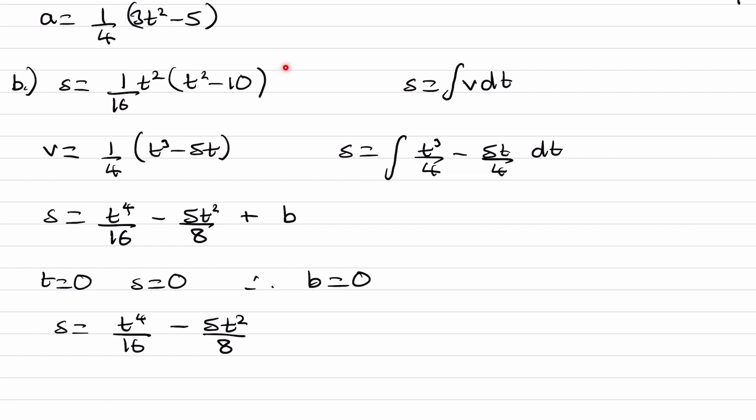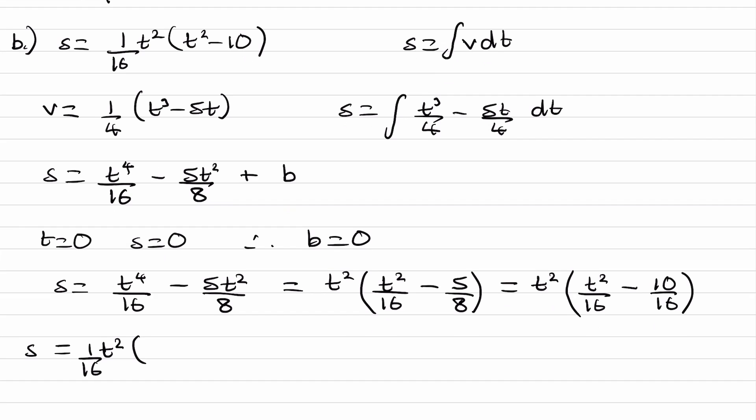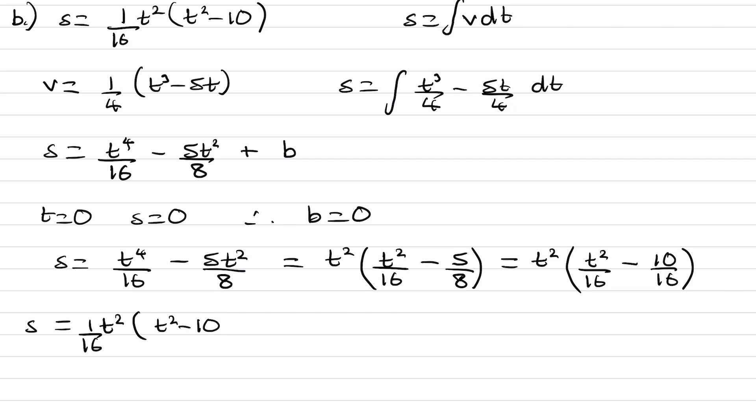Now we want to get it in this form here. So I'll take out t squared to begin with. t squared, we're left with t squared over 16 minus 5 over 8. And then we want to take out 1 over 16. So to make that a little bit easier, I will make a common denominator. So t squared, t squared over 16, minus, so times top and bottom of the fraction by 2. This becomes this. And then we can factorize. Finally, this becomes t squared. Take out 1 16th. And we are left with t squared minus 10.